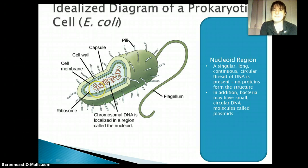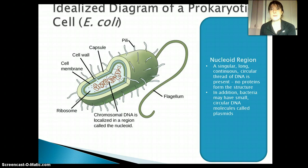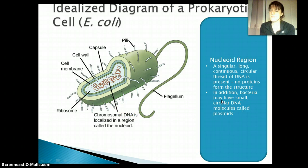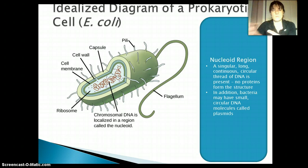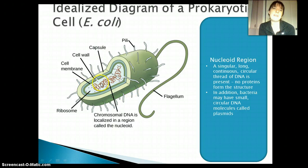Then we have our nucleoid region — that is our DNA. Prokaryotic cells have just one big section of DNA, and it's circular. There aren't different chromosomes like we have in eukaryotic cells. Sometimes there may be additional small bits of DNA called plasmids — plasmids are basically one or two genes, very small bits of DNA, and they're involved in being shared with other bacteria. It's important to remember there's no protein associated with this — sometimes it's called naked DNA, just sort of floating in the middle.